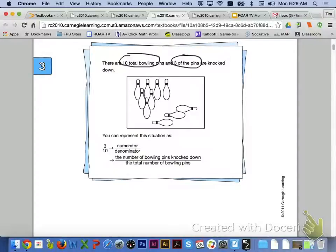If we take a look at the example at the bottom of the page, there are 10 bowling pins, and 3 of the pins are knocked down. You can represent this situation as 3 tenths, with 3 as your numerator, 10 as your denominator. You can also represent it as the number of bowling pins knocked down to the total number of bowling pins, again, representing the numerator and denominator.